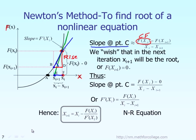If you take that distance CF and subtract the function evaluated at X sub i plus 1, looking at the picture, the function evaluated at X sub i plus 1 is exactly equal to the distance BE. So if you take CF and subtract BE, you will get CD. That CD represents the rise according to this notation.